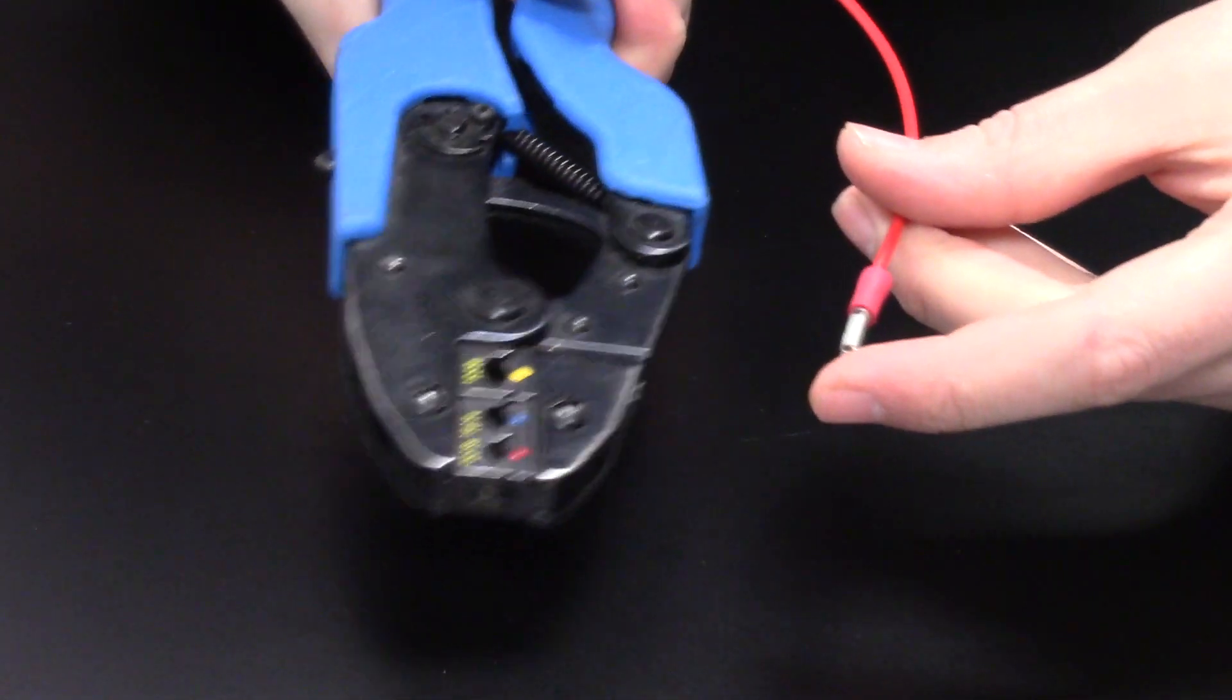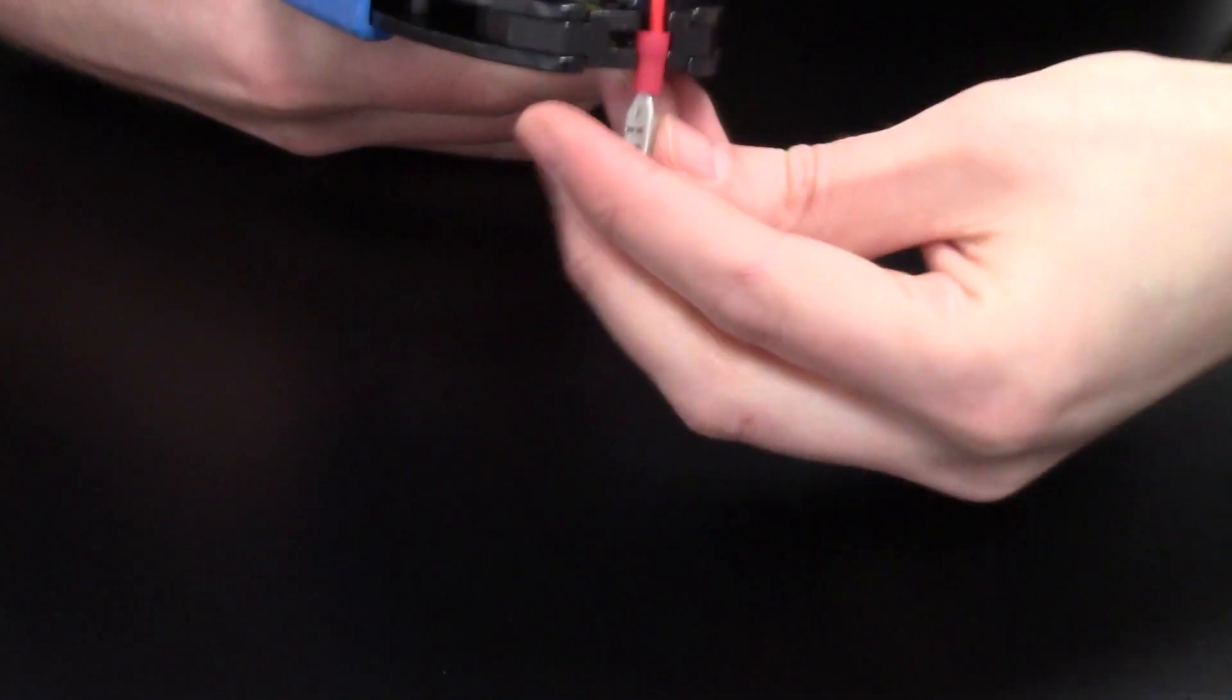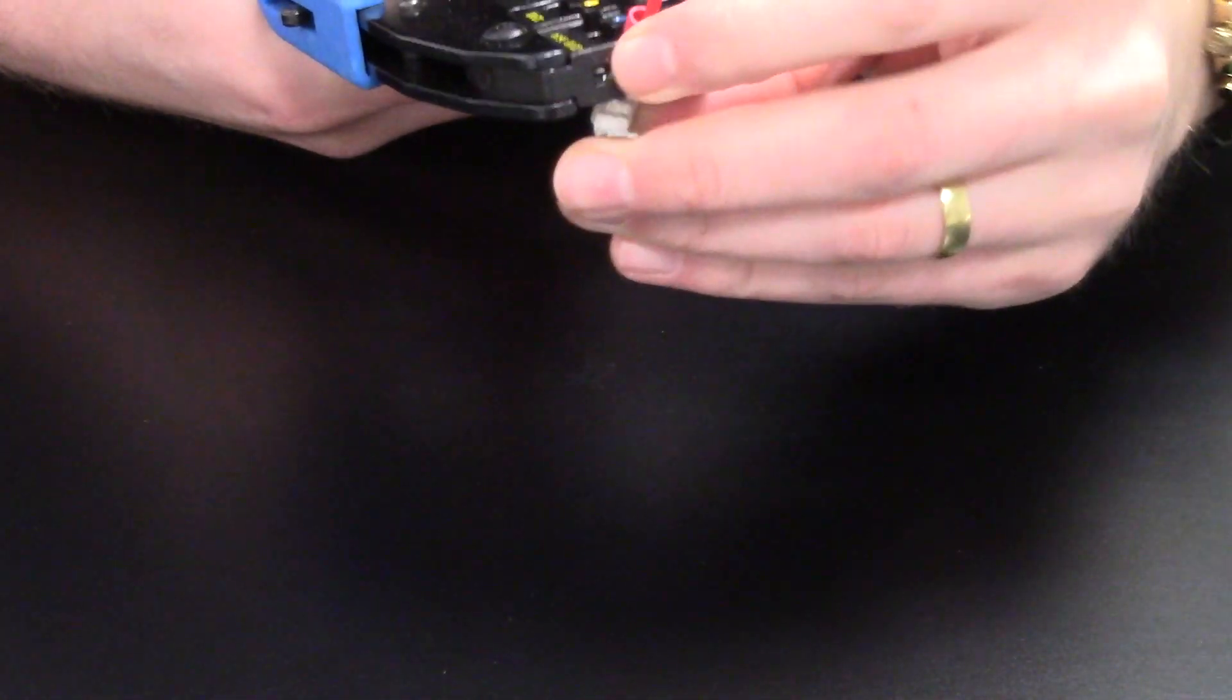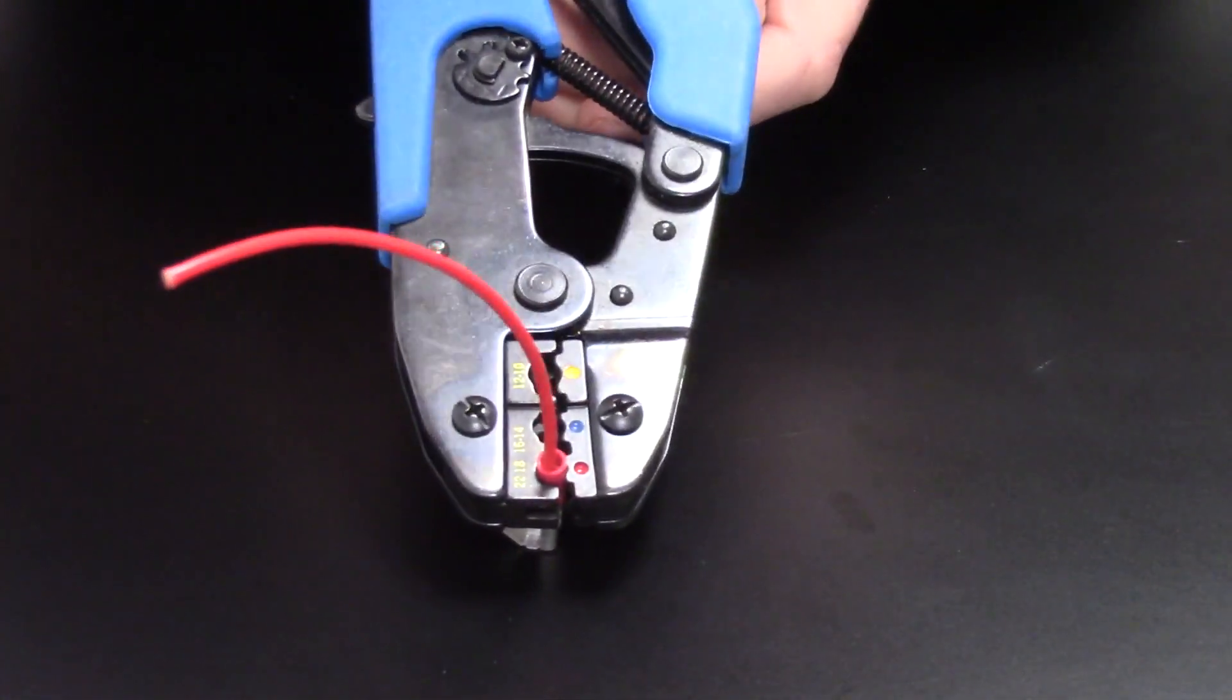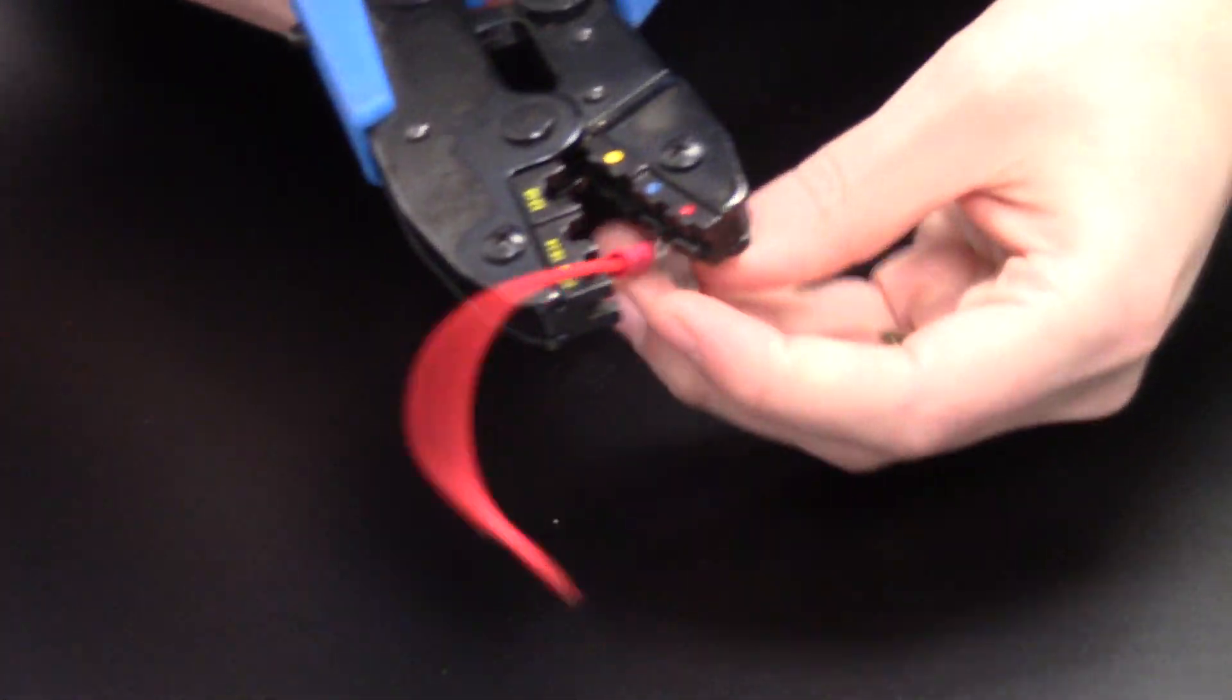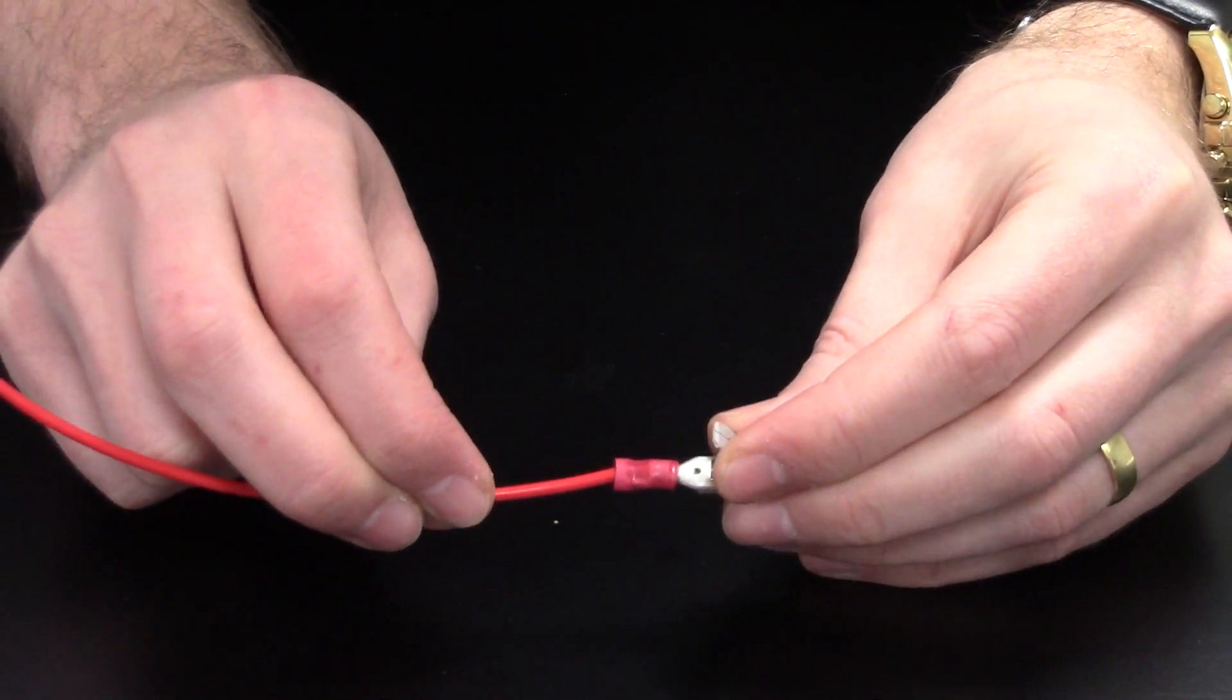You simply insert your cable. For example we're using a 1.5mm² cable and on your tool you'll see the coloured dots denoting which jaw is for use with which terminal. Here we are selecting the red for our red terminal. Once inserted simply squeeze on the tool and this will form your perfect crimp as you can see.